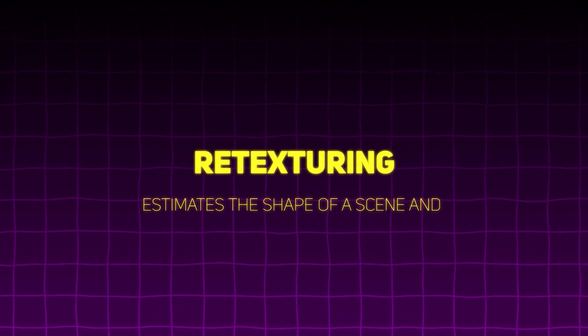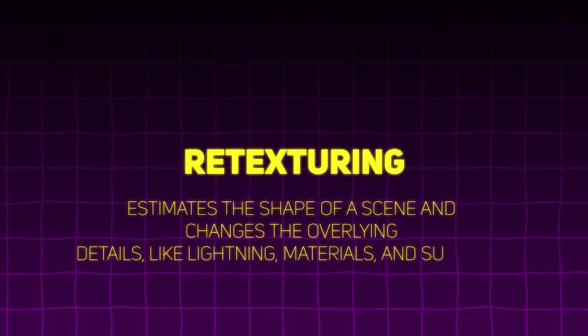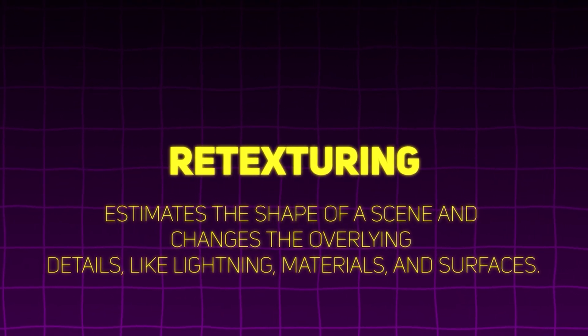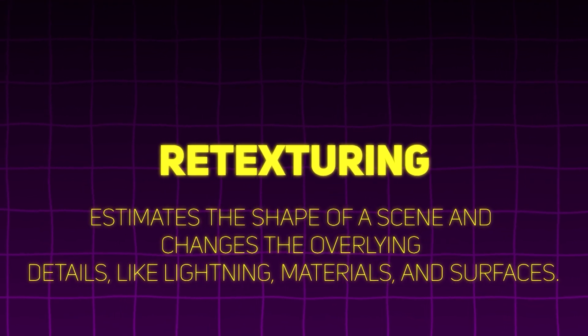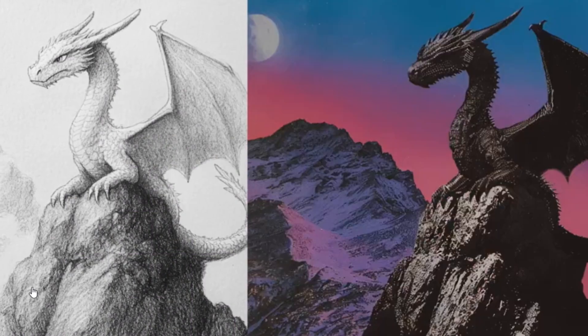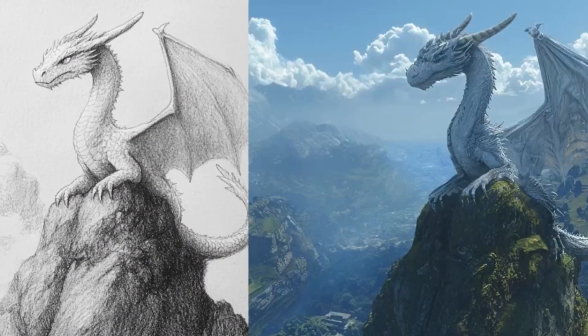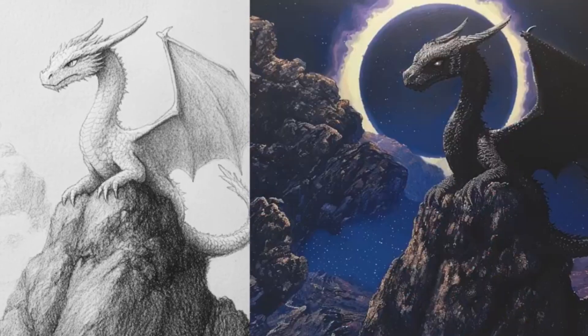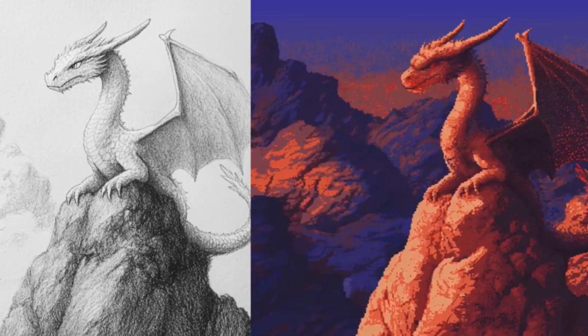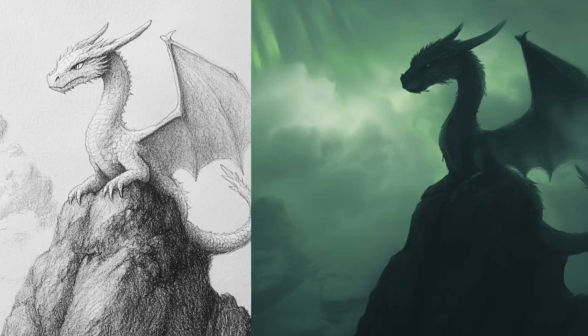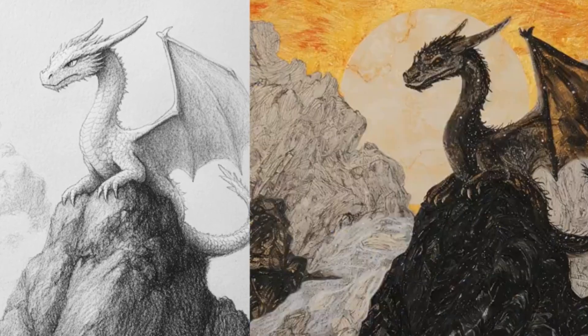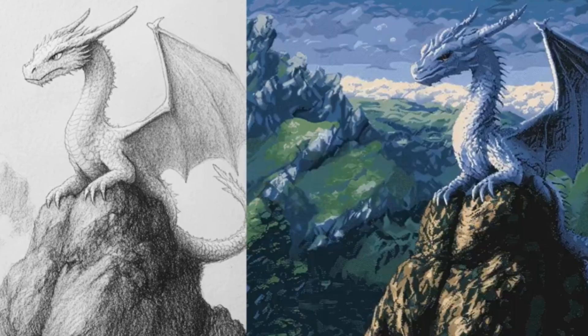The second feature is the retexturing feature. As the name suggests, you can retexture an image — changing the lighting, the materials, and the surfacing. This tool keeps the basic shape and composition of the image but uses AI to retexture everything else, giving it a brand new look based on the prompt you provide. Think of it like reimagining the image with different art styles, patterns, colors, and details solely based on your text prompts, while ensuring the initial scene remains intact.